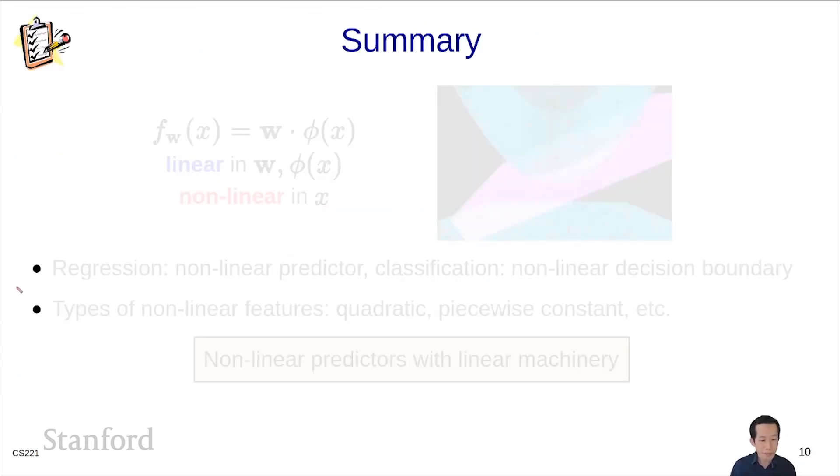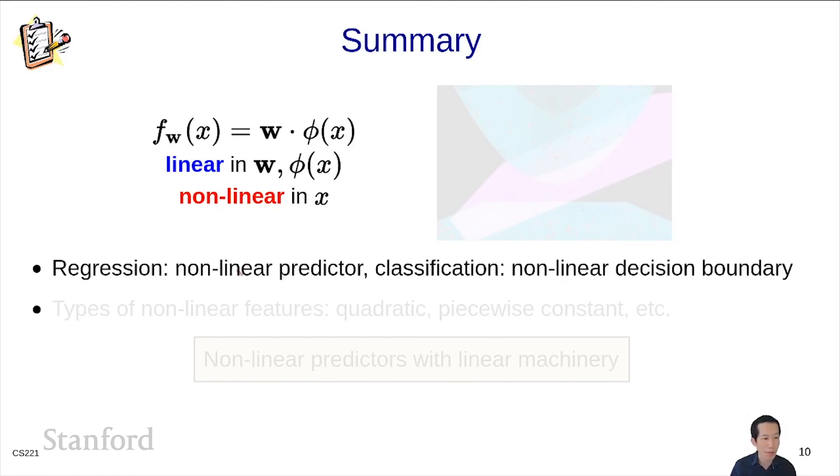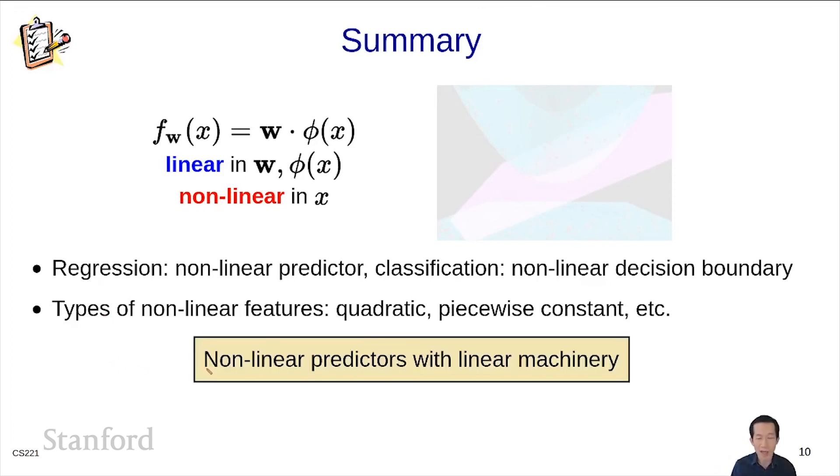To summarize, linear is ambiguous. We have a predictor in the case of regression, which is w · φ(x). It's linear in w and φ(x), but it's nonlinear in x. This is what allows us to get nonlinear predictors using the machinery of linear predictors. For regression, nonlinearity talks about the predictor directly, and for classification, we talk about the decision boundary. We also saw many types of nonlinear features: quadratic features, piecewise constant, periodic features. You can make up your own features for the application you have in mind. So next time someone on the street asks you about linear predictors, you first have to clarify linear in what. Okay, that's the end.